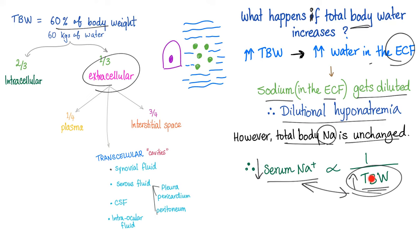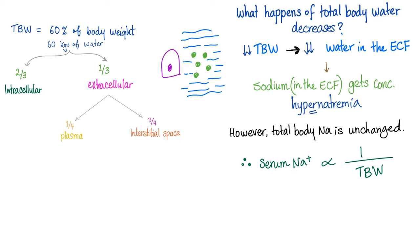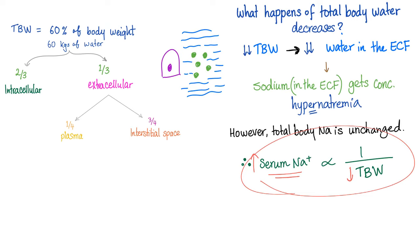Serum problems of sodium are usually due to water problems, not sodium problems. The hyponatremia was not because of decreased total body sodium — it was because of increased total body water. Now the exact opposite: if total body water decreases, ECF water decreases, sodium becomes more concentrated — as if we have more sodium. This is hypernatremia. However, total body sodium is unchanged. Decreased total body water leads to increased serum sodium — they are inversely related. Sodium problems in the serum are due to water problems.